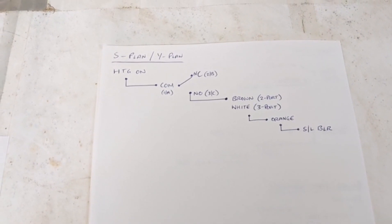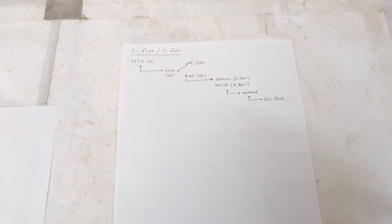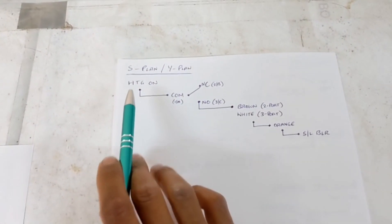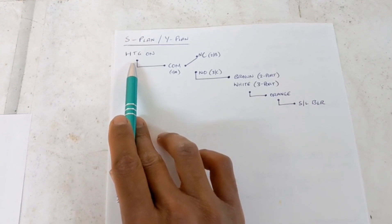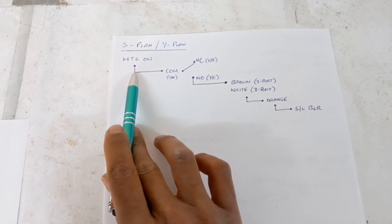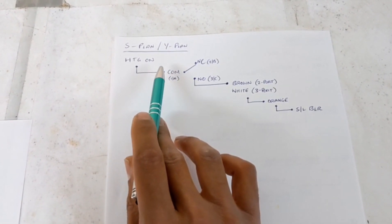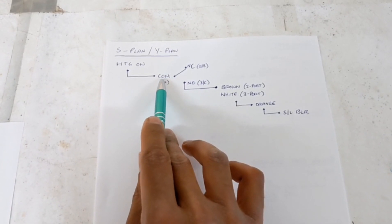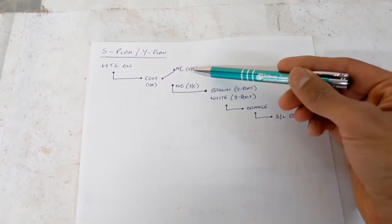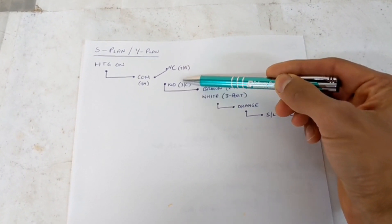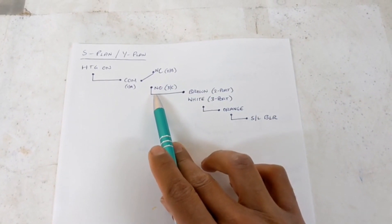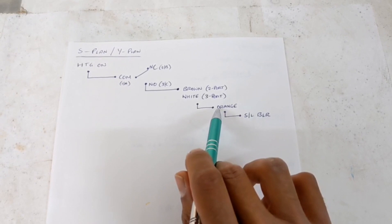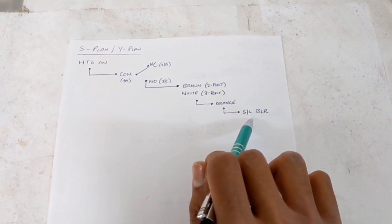The last one is how to wire up a room stat on an S-plan or Y-plan. You don't need to worry about the two ports, three ports, different cables, colored wires, or the programmer for this — just focus on the room stat itself. Regardless of whether it's S-plan or Y-plan, you're going to have a heating on signal from the programmer. That heating on goes straight to the common on your room stat — whether it's wireless or mechanical. At rest it sits at normally closed. When you turn the heating up it goes to normally open, and instead of going straight to the boiler it now goes to the brown wire on a two-port or the white wire on a three-port, which livens up the orange wire, which in turn goes to the switch live on the boiler to fire it up.